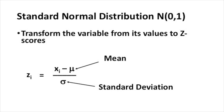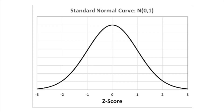That other approach is using a standard normal distribution — a normal distribution with a mean of zero and a standard deviation of one. We get values for the standard normal distribution by transforming the variable from its values to z-scores. To calculate a z-score, you take the value of the variable (xi), subtract the mean of the distribution, and divide by its standard deviation.